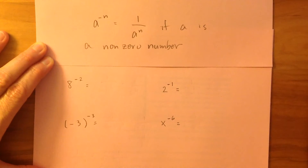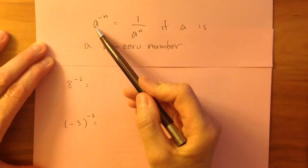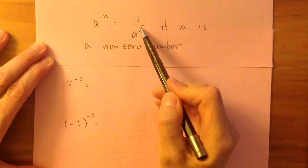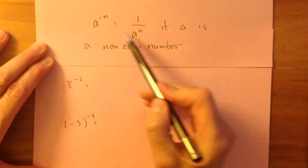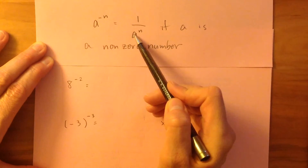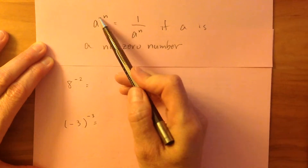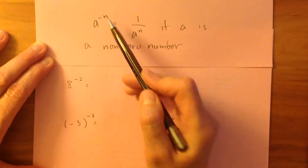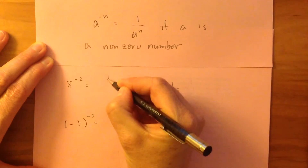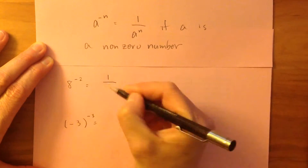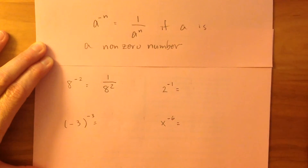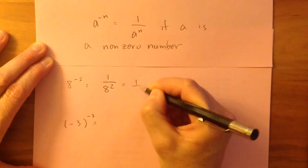Let's work on these examples together. So a to the power of negative n — how do I rewrite that? I have 1 over, I have my same base a, but now my power, once I move the a into the bottom, the power of a becomes the negative of this number. So if I have 8 to the power of negative 2, it's going to be 1 over 8 to the power of positive 2 instead. So that's going to be equal to 1 over 64.